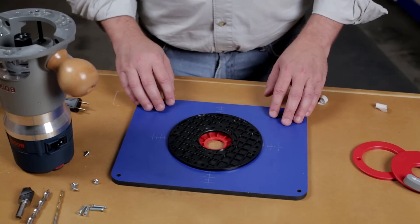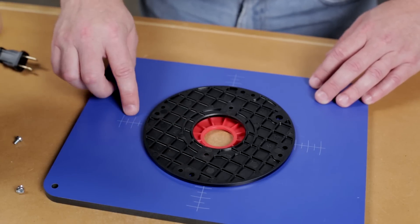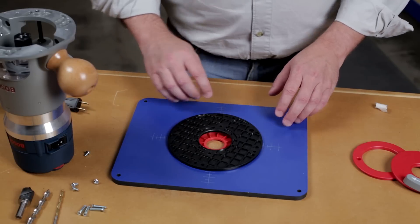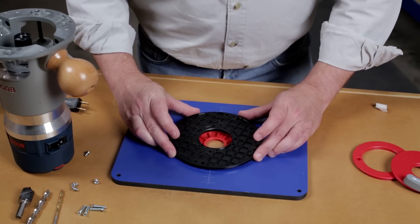The next step is to make sure that your router will be centered, and you'll do that using the targeting pattern that's engraved in the underside of the plate. Just pull your subbase up, making sure not to rotate it.